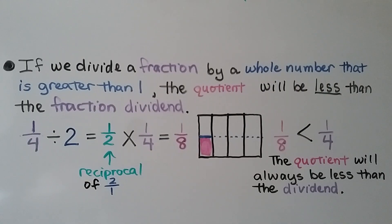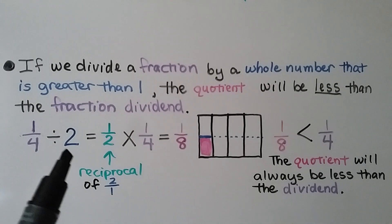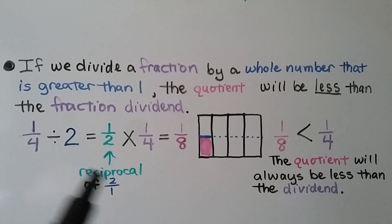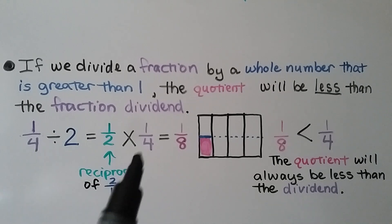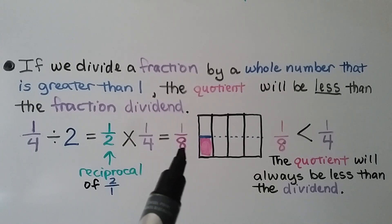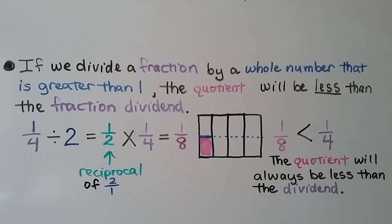If we divide a fraction by a whole number greater than 1, the quotient will be less than the fraction dividend. For example, 1 fourth divided by 2: the reciprocal of 2 whole is 1 half. We multiply it by 1 fourth and get 1 eighth. This 1 eighth is less than 1 fourth — the quotient will always be less than the dividend.